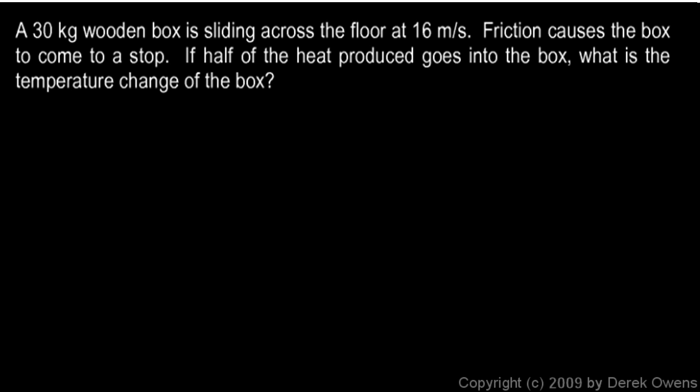In this example, we're told that a 30 kilogram wooden box is sliding across the floor at 16 meters per second. Here it is, this wooden box is moving along at 16 meters per second and it's coming to a stop. Friction causes the box to come to a stop. Half the heat produced goes into the box. We know that friction generates heat and we're asked to find the temperature change of the box.